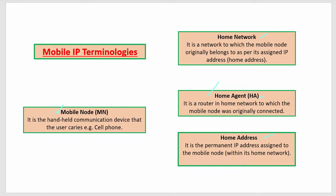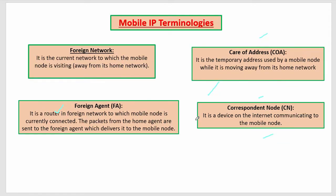Foreign Network is the current network which the mobile node is visiting when it is not available in the home network. Foreign Agent is the router in the foreign network to which the mobile node is currently connected. When the mobile is in a foreign network, it first connects to the foreign agent, and packets from the home agent are sent to the foreign agent, which delivers them to the mobile node.